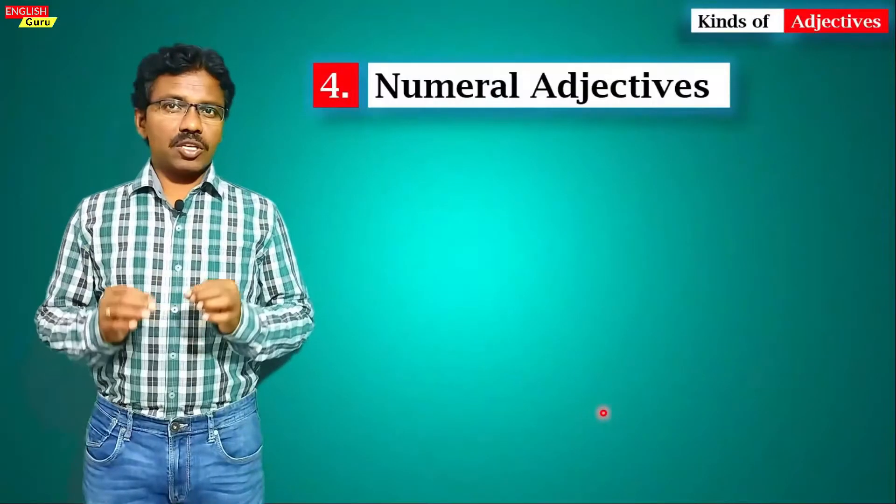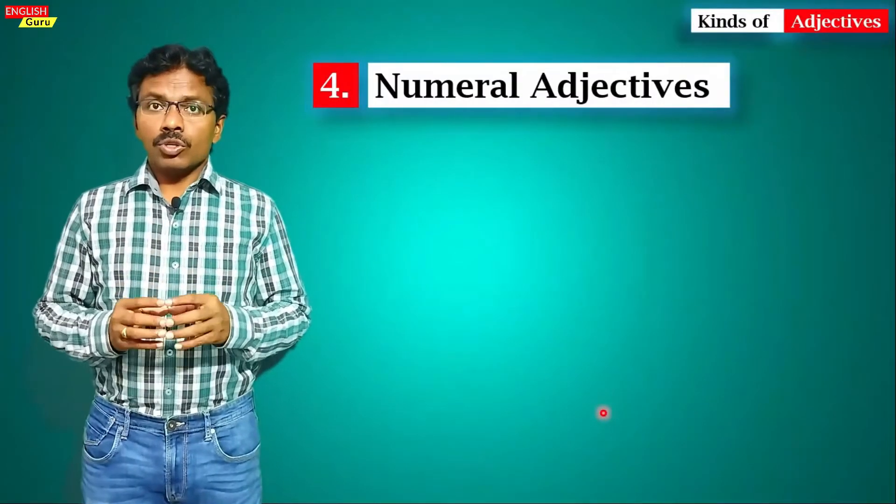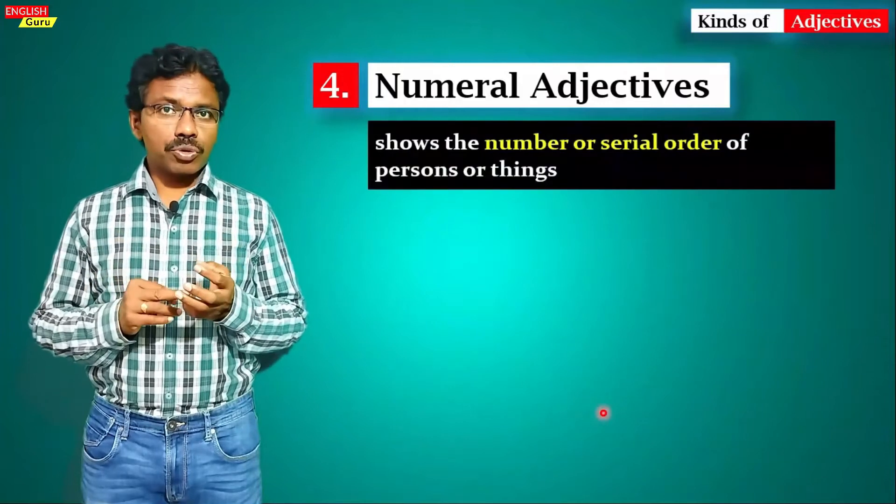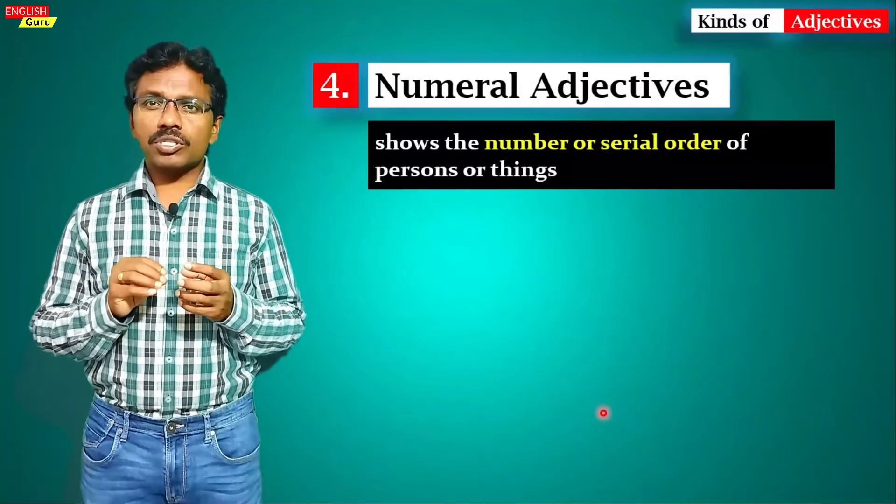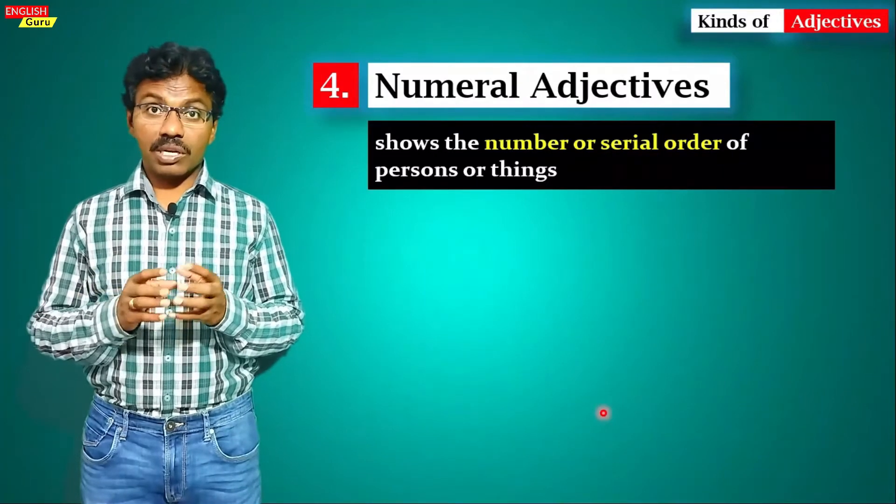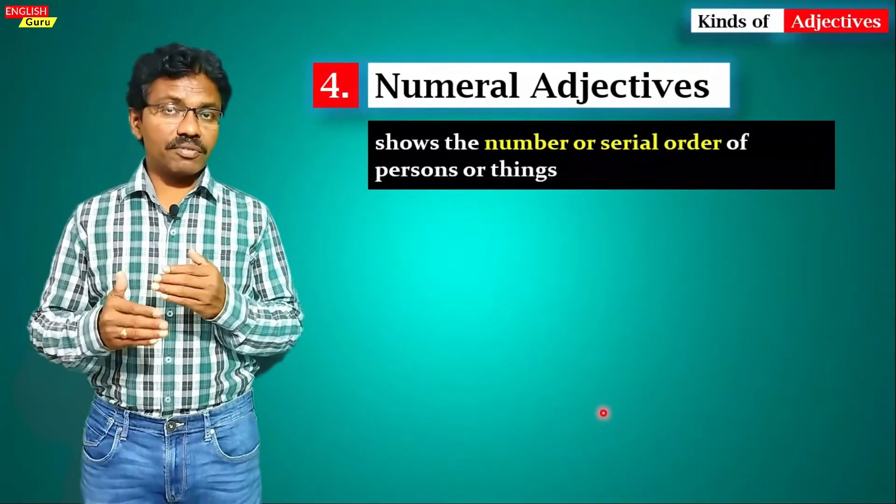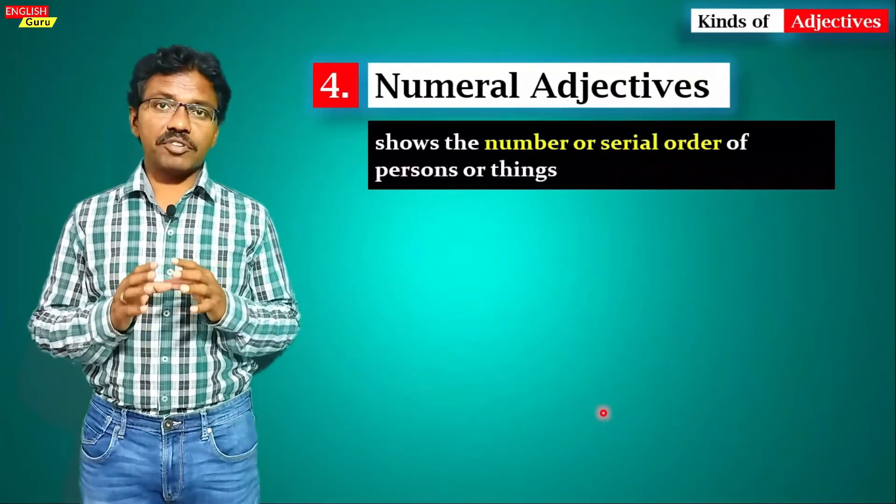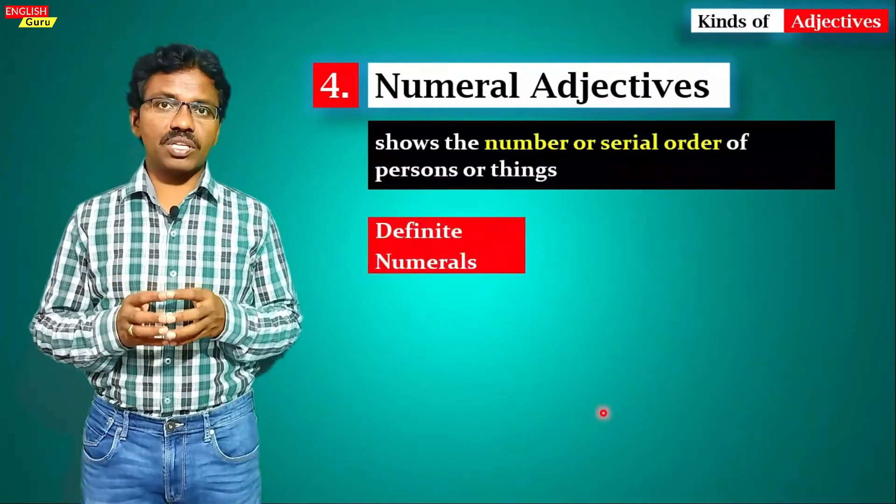The fourth one is numeral adjectives. Numeral adjectives show the number or serial order of persons or things. We have two kinds of numeral adjectives.